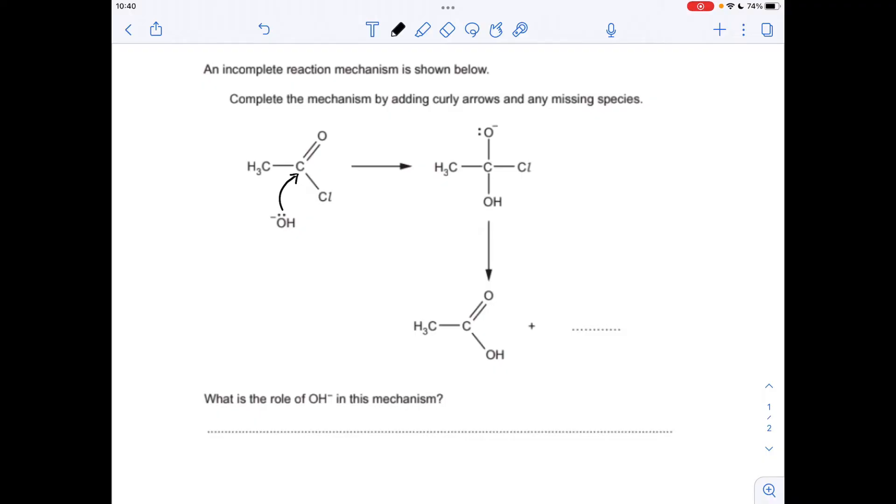So that needs a curly arrow from the lone pair on the OH minus to that carbon. And to create the single bond here with the negative charge on, we need to repel a pair of electrons from the middle of the double bond. So it's the pi electron pair that would be repelled onto that O, and that would generate this situation here.